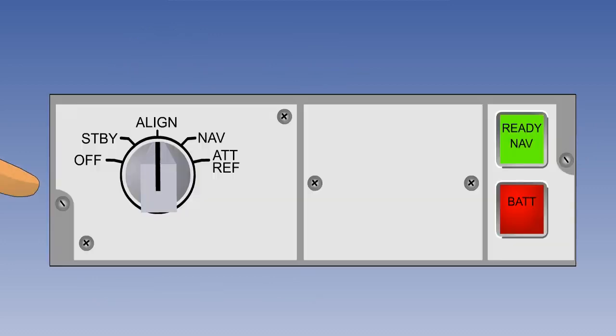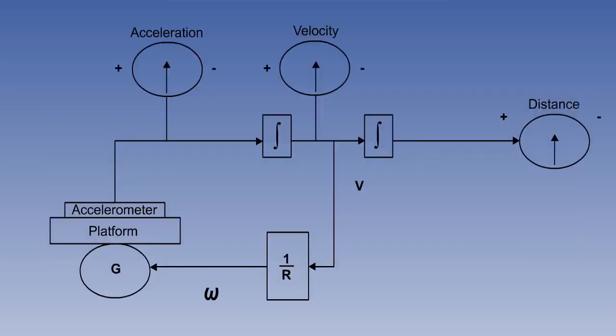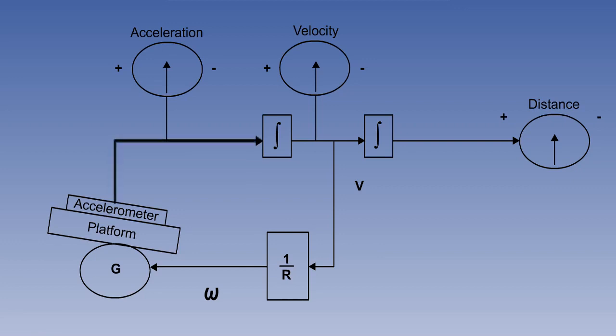So now let's see what effect is caused by an initial leveling misalignment or platform tilt. Imagine that we are on the ground. Alignment has just completed, and we switch the MSU to navigate mode. Here's the basic diagram. But unfortunately, on completion of the alignment, there is some leveling error. The component of gravity will be misinterpreted as a false acceleration.